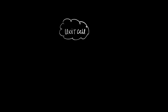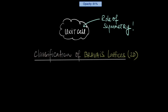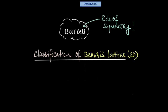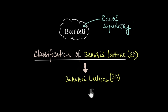Now that we know what unit cells are and the role symmetry plays while determining a unit cell, in this video we are going to talk in much greater detail about different Bravais lattices in two dimensions, and try to classify these lattices into different categories based on the kind of unit cells that they can have. Doing this will help us understand and better appreciate the different unit cells possible in the more complex three-dimensional lattices. So let's jump right into the video.